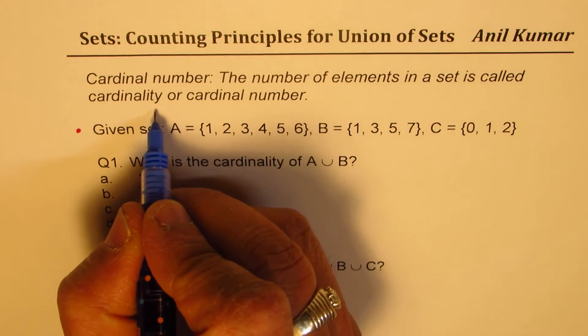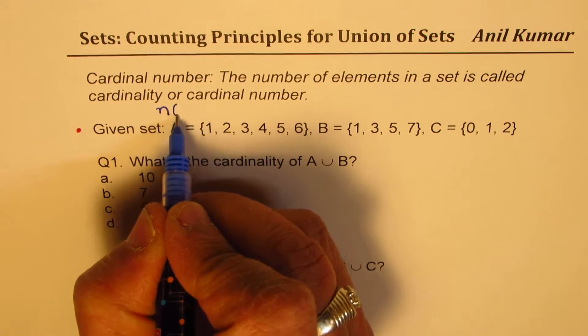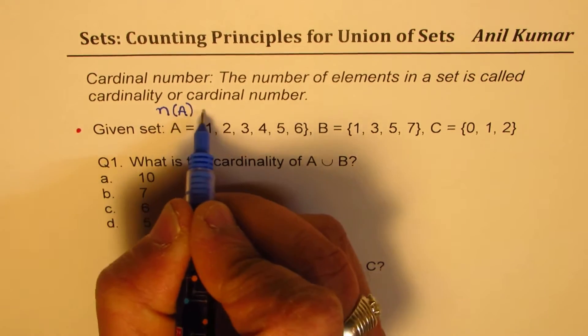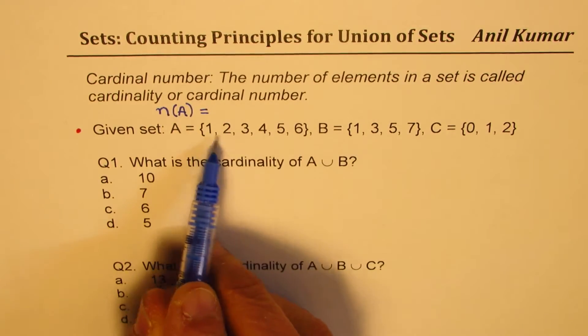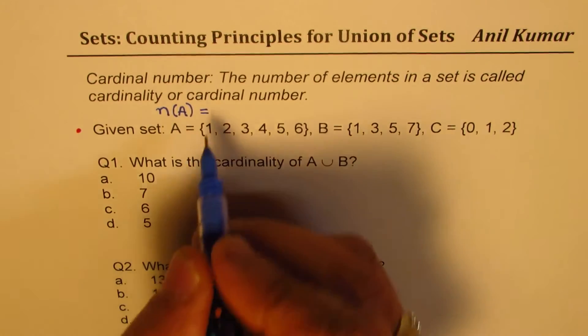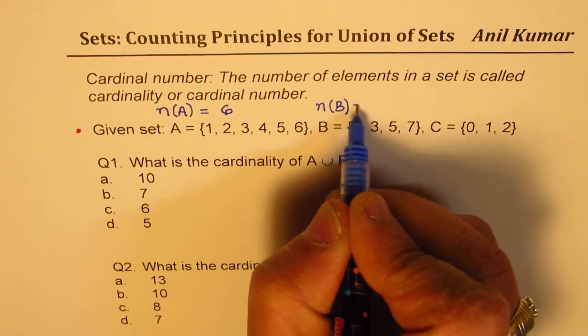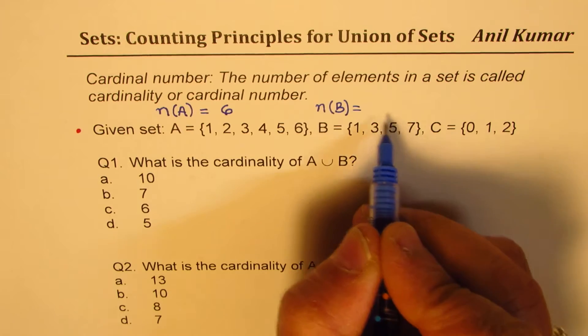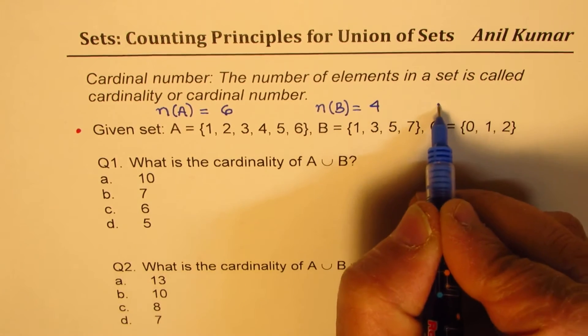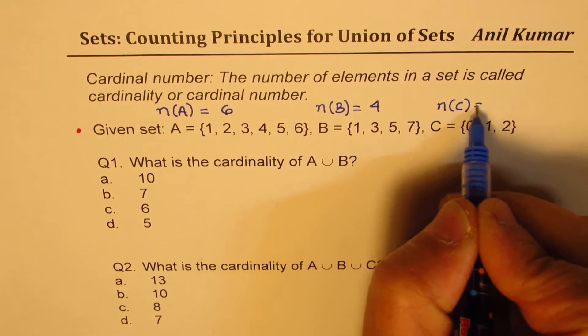Now, cardinal number is normally written as n and the name of the set, and A means number of elements in set A, which is 6 for us. Number of elements in set B will be 1, 2, 3, 4. And number of elements in set C is 3.